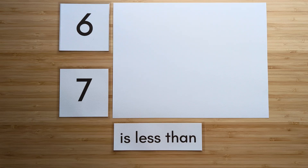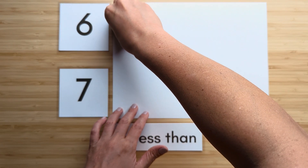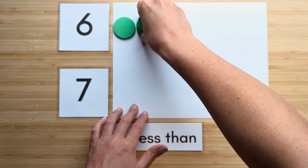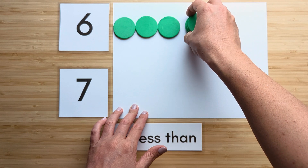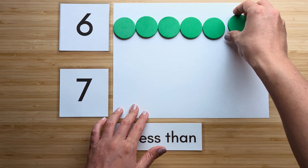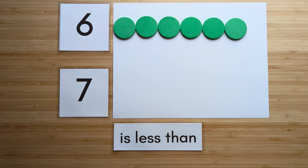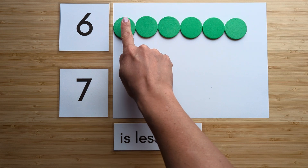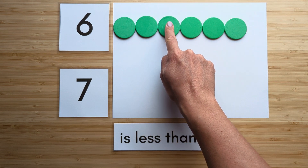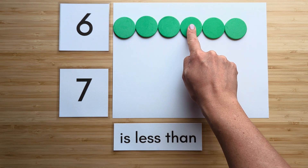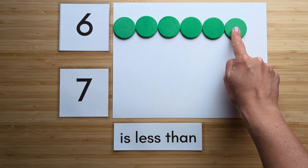Now we're looking at less than. Make the number six. Point and count: one, two, three, four, five, six.